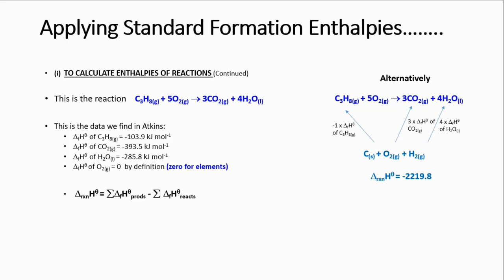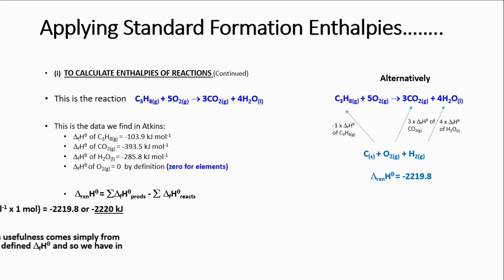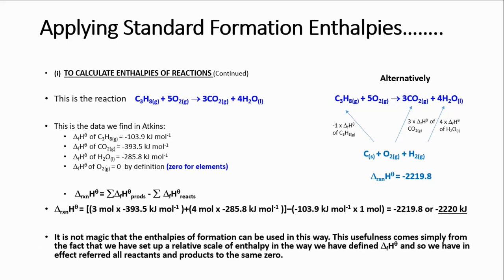Why is that? Well, if you look at the standard enthalpy of formation data, you realize that these are molar values — meaning that the values given are for one mole. As we discussed in the previous lecture, standard enthalpy of formation speaks to the enthalpy change when a mole of a substance is formed from its elements in their reference states. For this reaction, given the data, we are able to calculate the standard enthalpy change, and the value that we have is minus 2,219.8 kilojoules. Now, if you look at the value for oxygen, the standard enthalpy change of formation for oxygen gas, you realize that it is zero.